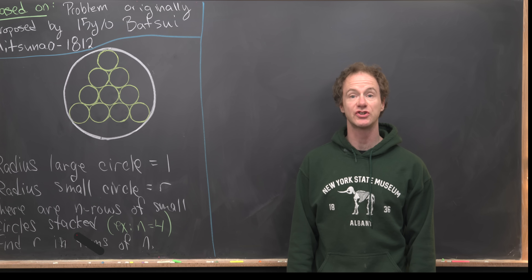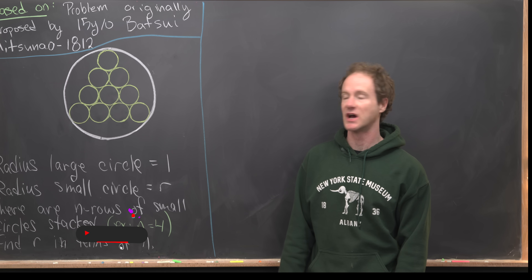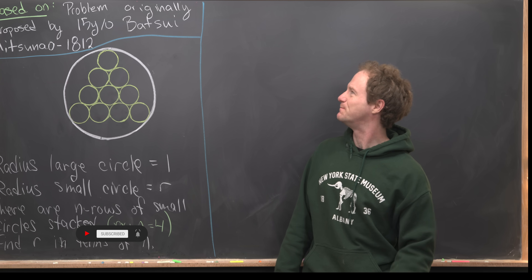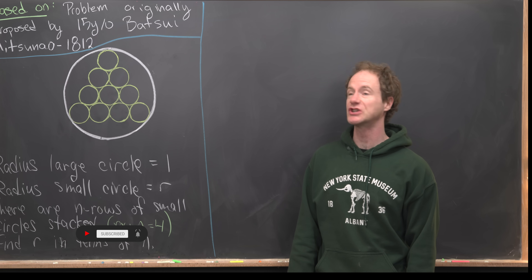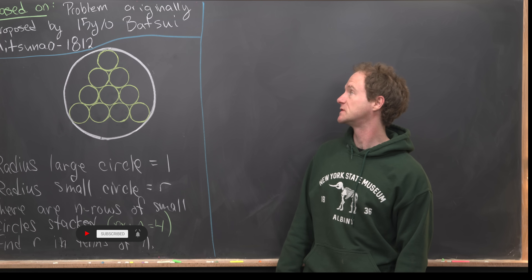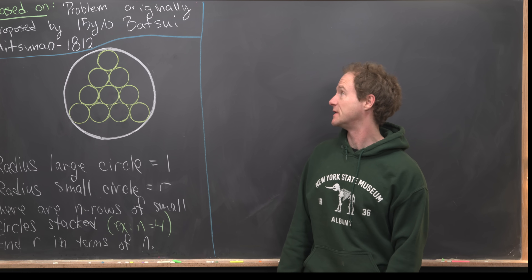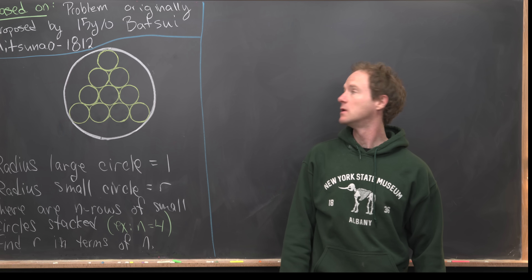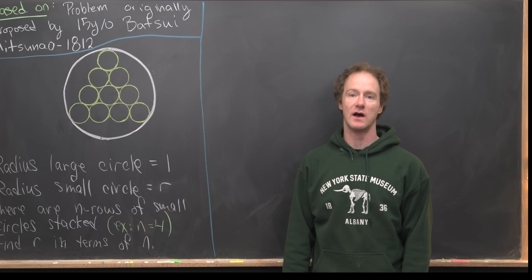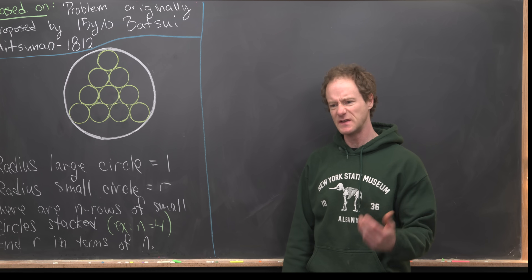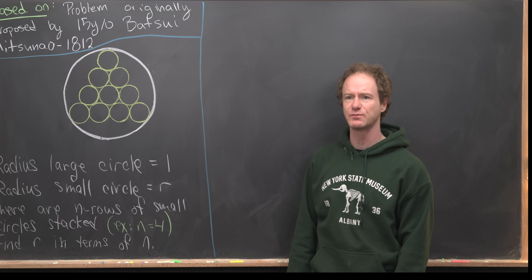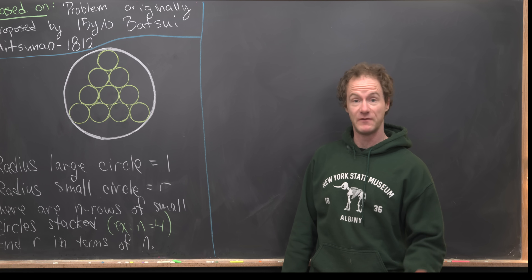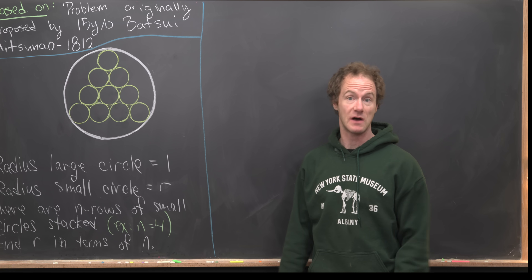Today I've got a pretty nice traditional Japanese geometry problem for you. This is based on a problem originally proposed by a 15-year-old Japanese student named Batsui Mitsunao in 1812. I think that's pretty cool that this problem was proposed by a 15-year-old over 200 years ago.